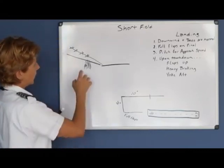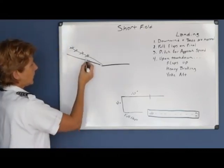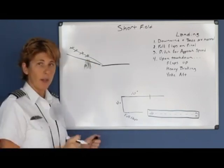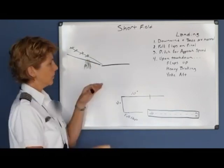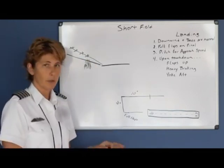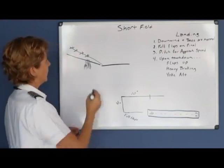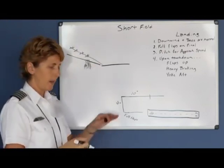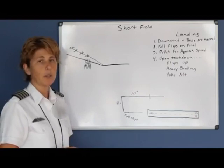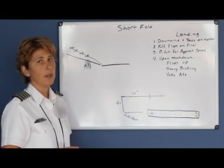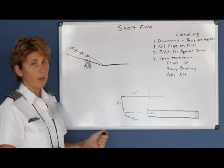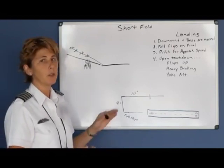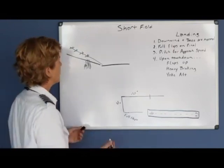If we start to get too low and you see that you're not going to clear the trees, then you should add more power in order to arrest some of that descent rate. But if you're clearly too high, then just pull the throttle back and allow the airplane to increase its descent rate. Of course, when you adjust the throttle, you will have to adjust your pitch a little bit to still maintain your same approach speed.